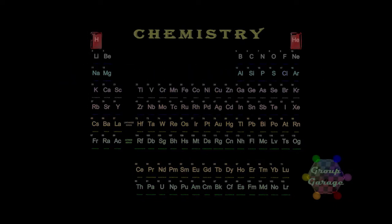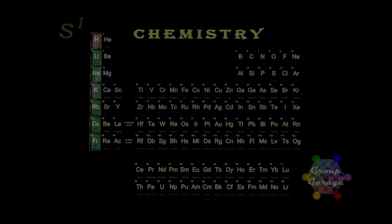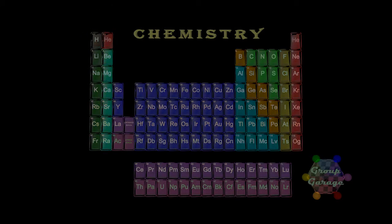Previously we saw each row or period on the periodic table was a principal energy level, and the first two columns or groups, which we know as the alkali and alkaline earth families, show us the first and second electron captured in the principal energy level.